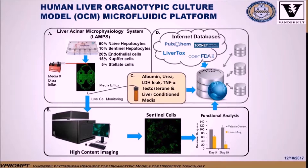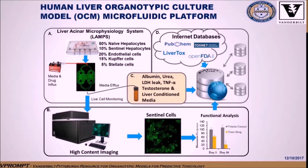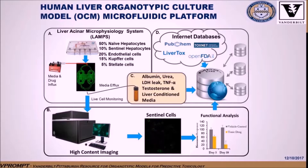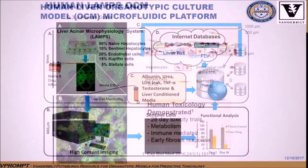Note in panel C the collection of media effluxing from the liver OCM. The efflux media allows measurements of various secreted biomarkers related to the health and function of the liver. Panel D shows how the data is collected, managed, and analyzed through the use of a microphysiology database. The database is not just a repository to store data, but is web-linked to various public databases to draw on external information on any test compound, with an overall goal to build predictive computational tools which can be used to assess human risks.